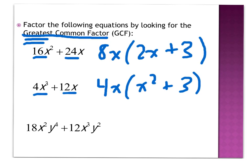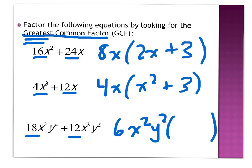Now the problems get a little more complicated because we have multiple variables — a number, x, and y — and we're looking for the common factor with each of those different pieces. I always start with the numbers: 18 and 12, the biggest number that divides into both is 6. For x² and x, the biggest I can divide into both is x. For y⁴ and y², the biggest I can divide into both is y². So the GCF is 6xy². Dividing the first term by 6xy² gives 3y², and dividing 12x³y² by 6xy² gives 2x. This is the simplified factored equation.